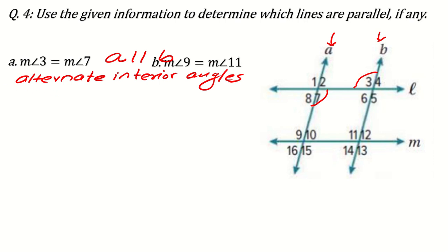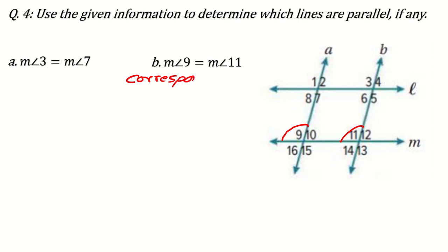Similarly, we can have this part also. Measurement of angle 9 is equal to measurement of angle 11. So what is 9 here? 9 is this side you can see and 11 is here. So what you can see? They are at the same place but different position and such angles are called corresponding angles. So if they are equal then no doubt lines will be parallel to each other. So line A will be parallel to line B.